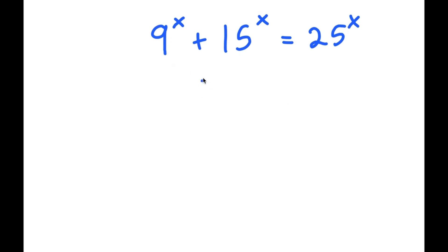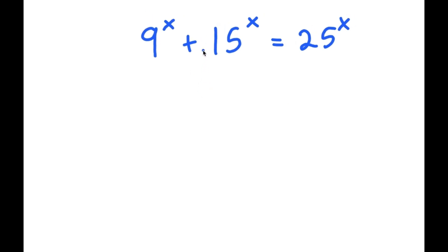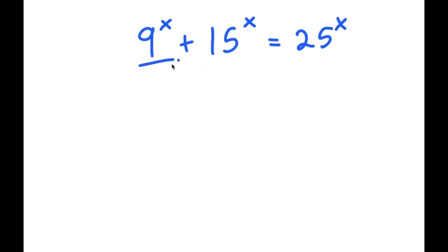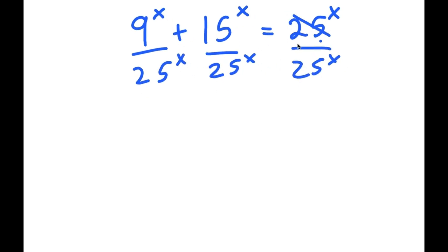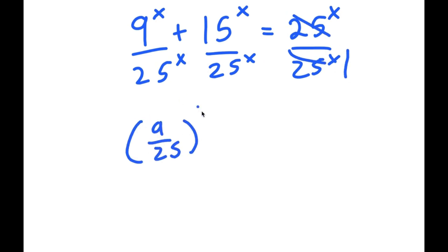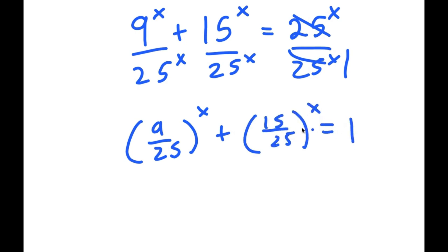I'm going to first start by dividing every term by 25 to the power of x. These two cancel out to get 1, so now I have 9 over 25 to the power of x plus 15 over 25 to the power of x is equal to 1.